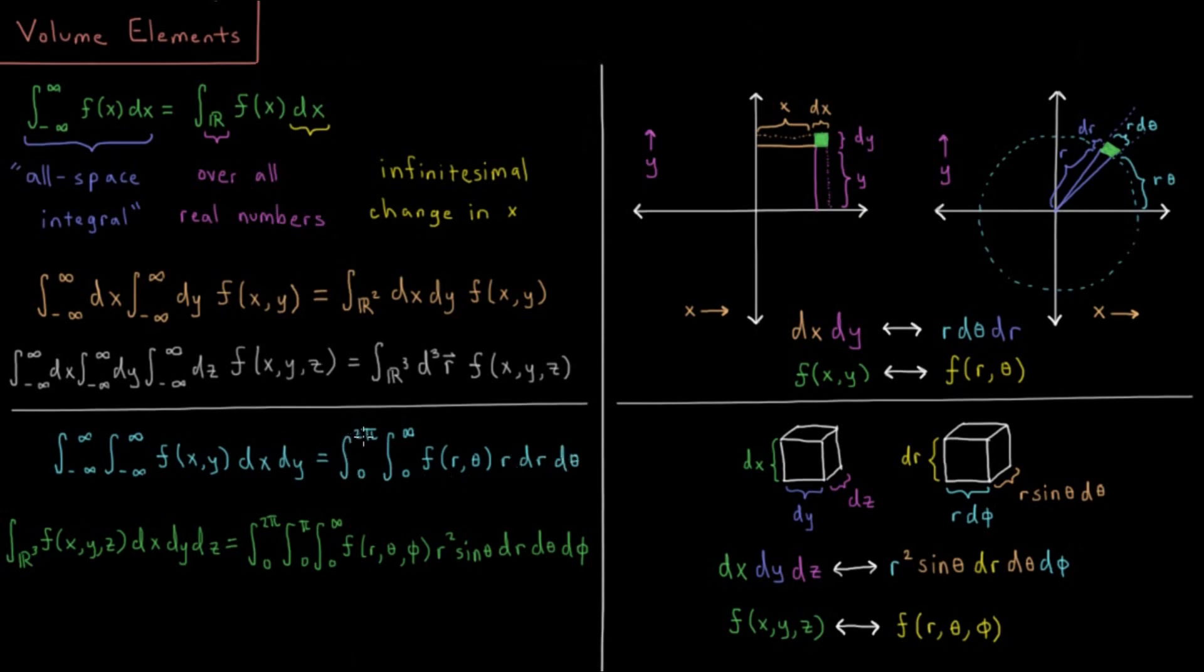But our volume element is a little bit different here. Our volume element instead of being dx dy is r times dr times dθ. So there's an extra factor of r there, and that's what we're going to discuss in a minute.